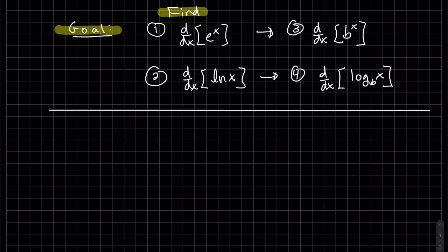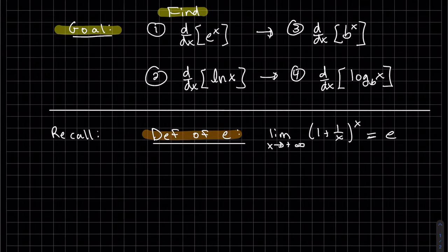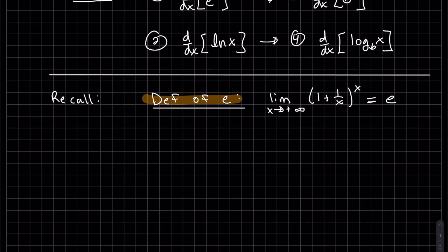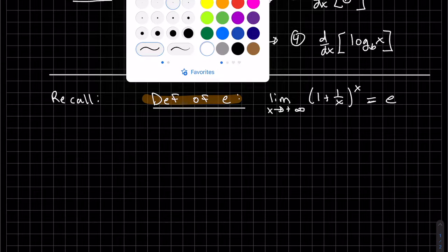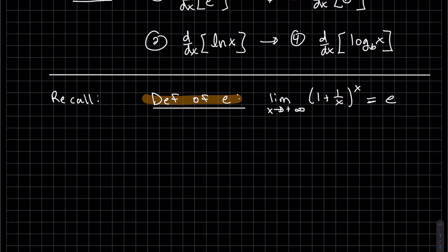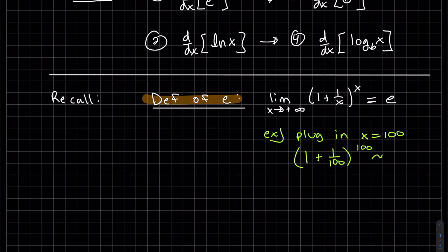Before we get started on number one, here is the limit that is equal to e. If you ever forget it or have an inkling it might be e, what you can do is just plug in a big number. Let's do 100 and calculate that on your calculator — I get 2.705, so it's close to 2.71. The bigger the number we put in, the closer to e we get. So that's to the first power.